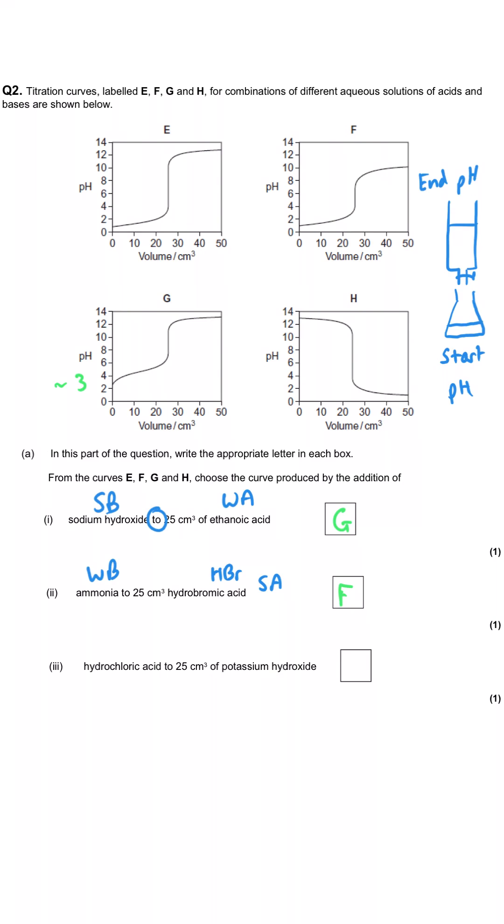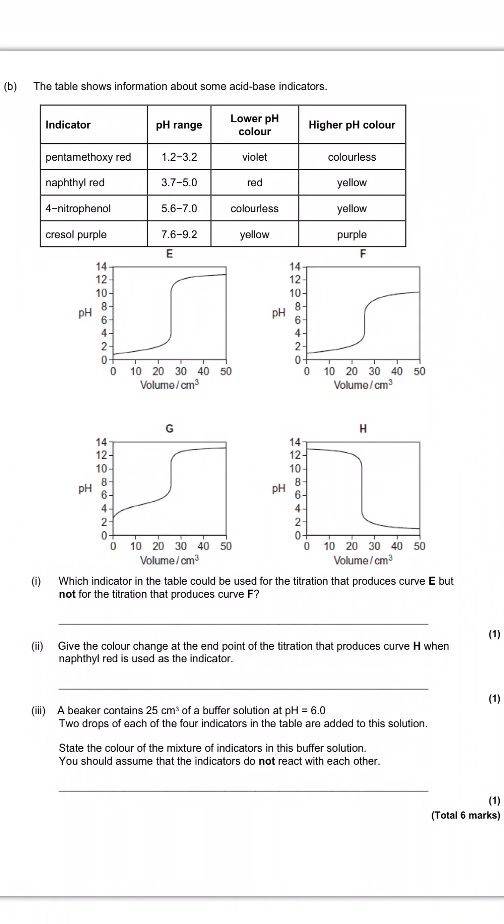And last of all, we're adding hydrochloric acid, which we know is a strong acid, to potassium hydroxide, which we know is a strong base. And once again, they've given us two similar options. But the important thing is that there's a strong acid is being added from the burette to the strong base in the conical flask, which means it will start at the strong base pH, which means it's going to be curve H, which finishes very low for the strong acid. And then we've got similar questions again, but with a little twist later on, about the four pH curves.